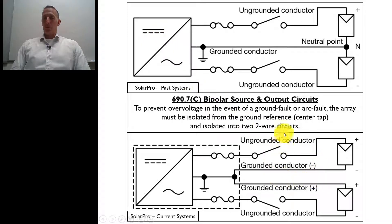Now what they're requiring is that that center, that ground reference or center tap, here's your center tap right here, that this connection is made within the inverter. You can see here's where we're changing it from DC to AC. We're connecting to the earth here.